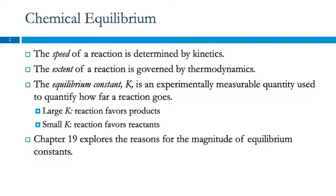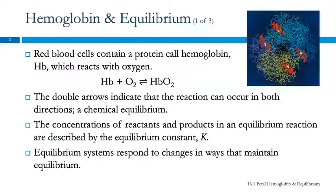The equilibrium constant tells us how far the reaction goes. If K is very large, then the reaction favors the products and goes mostly towards completion. If K is small — less than 1 — it favors the reactants, and maybe only a little bit reacts. In Chapter 19, we will look at some reasons for the magnitude of equilibrium constants, but for now we're just going to look at what they are and what they mean.